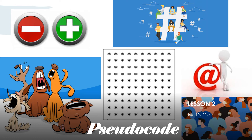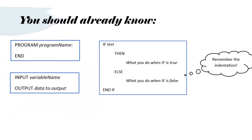Hi, today we're going to do pseudocode lesson two. You should already know from lesson one the beginning of a program — program name and then END. How to do input, we usually say INPUT and put a variable name. How to do output, we just say OUTPUT and put the data to output. Special words are always in capitals, the words that we use again and again.